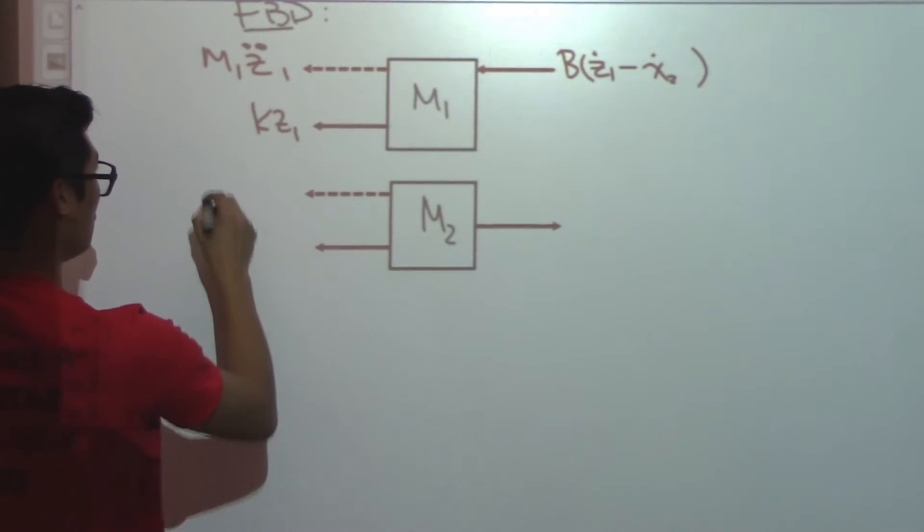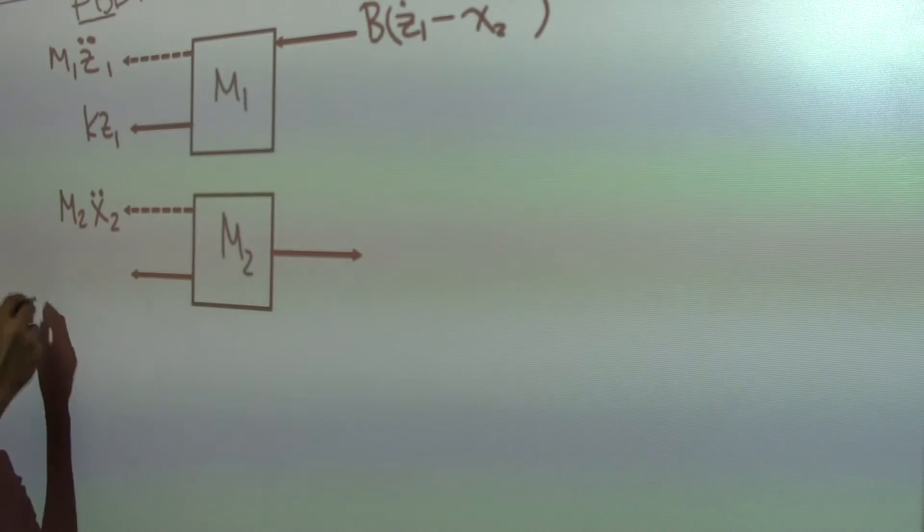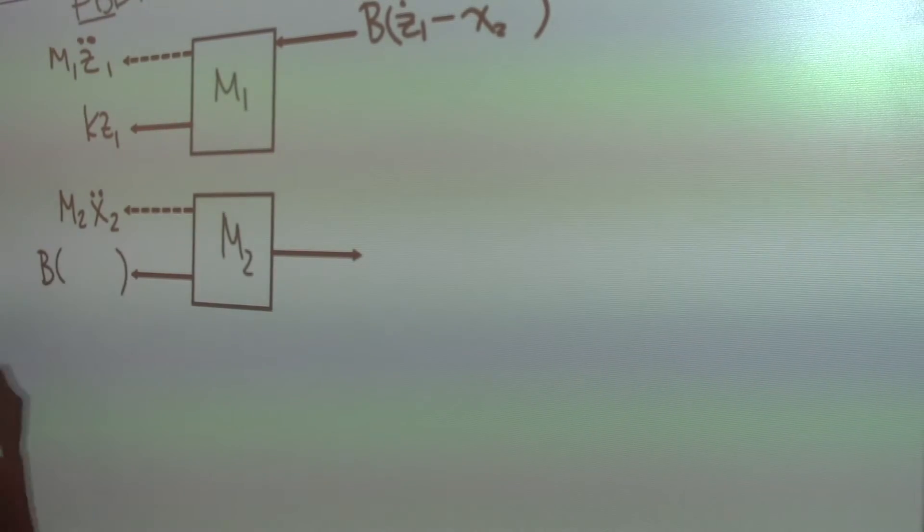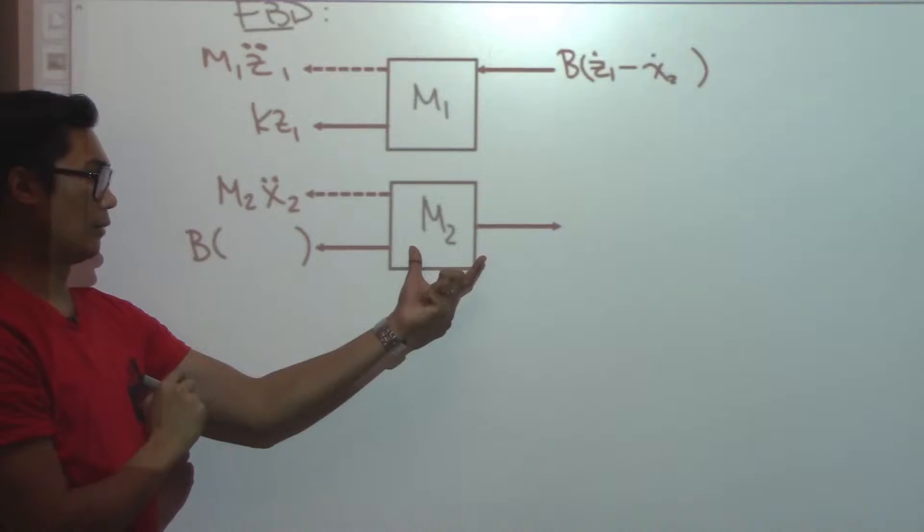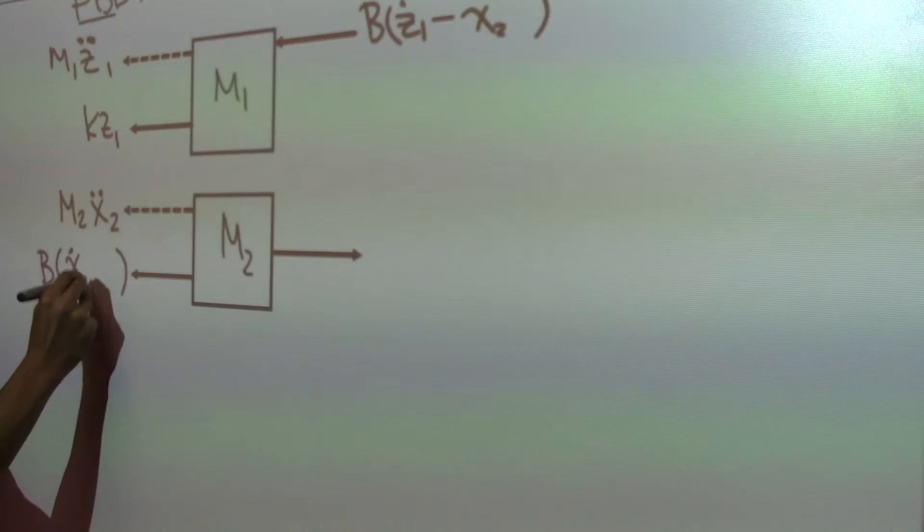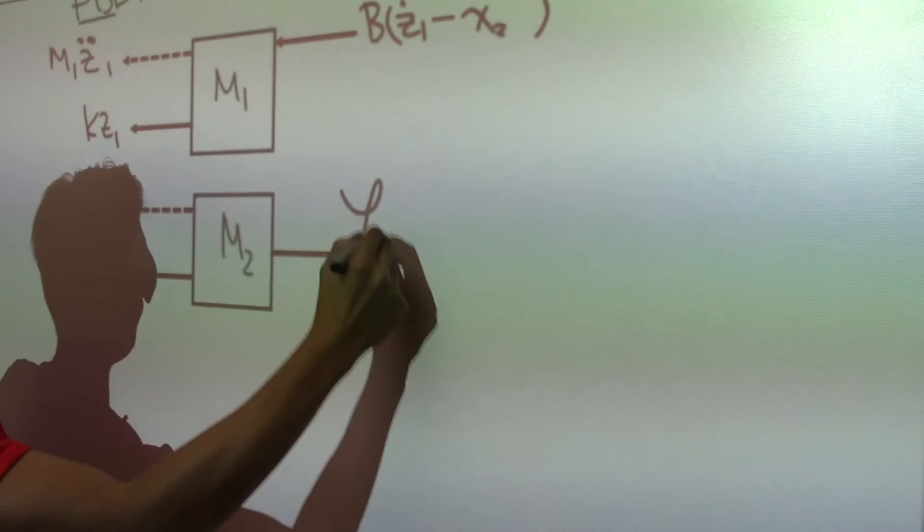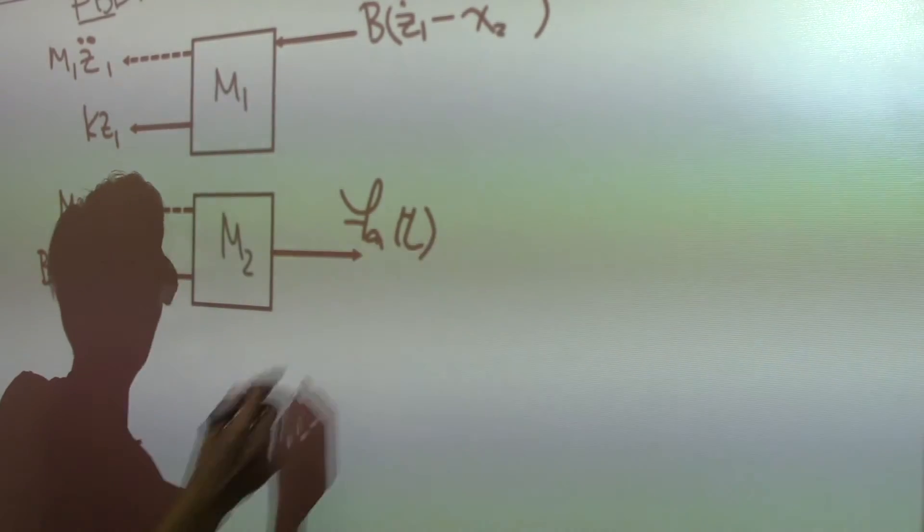And then if I do the same thing for mass 2, here we'll have M2 X double dot 2, B with something in brackets. And then again, we know that M2 is dependent on X2. So here we're going to have X dot 2 coming first, minus Z dot 1. And here we have FAT, which is the applied force.